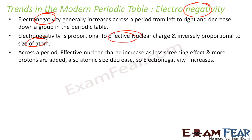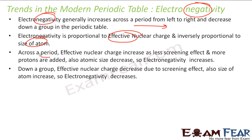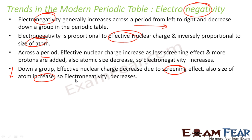So across a period, if you go from left to right, the effective nuclear charge increases as protons are added, and the size also decreases — that's why electronegativity increases. On the contrary, if you go down the group, the effective nuclear charge decreases because of the shielding effect and the size increases, so electronegativity also decreases.